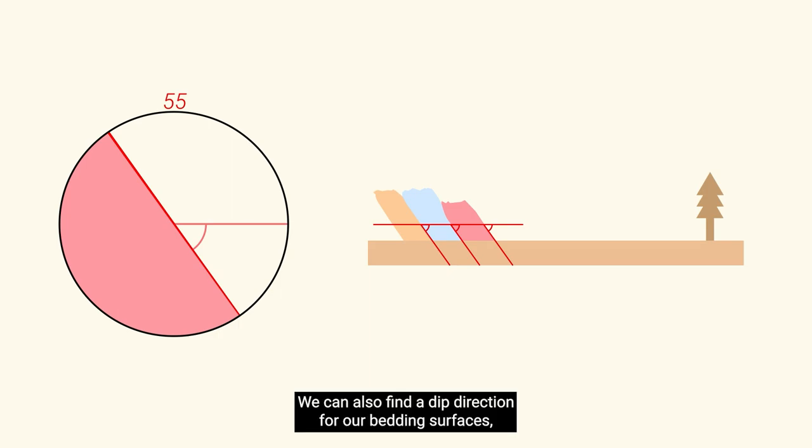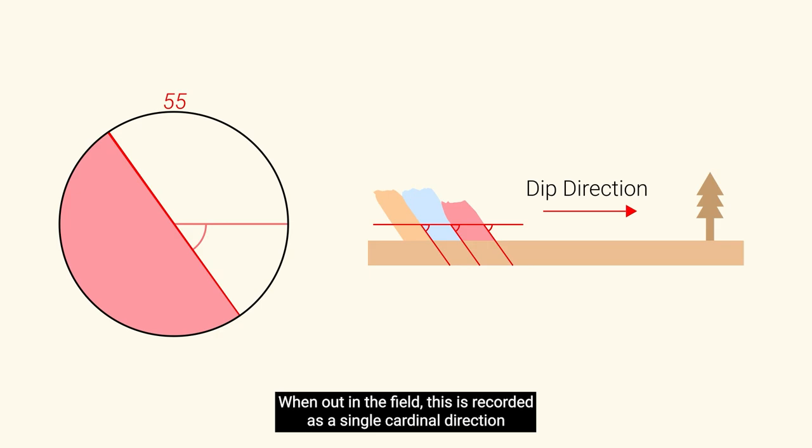We can also find a dip direction for our bedding surfaces, which is simply the direction our slope is facing. When out in the field, this is recorded as a single cardinal direction and can be found by using your compass.